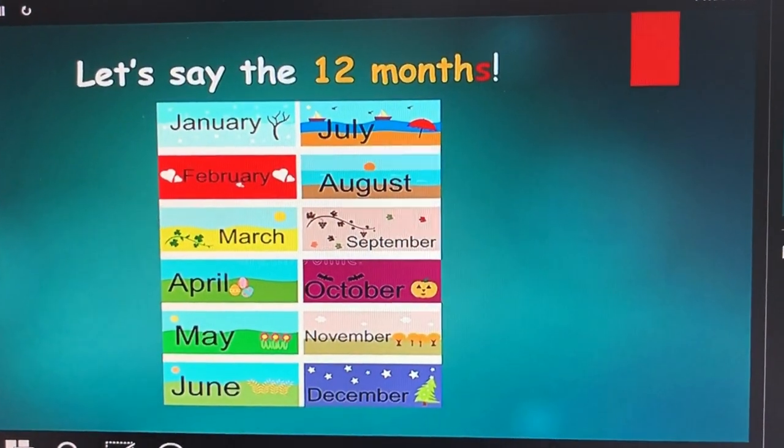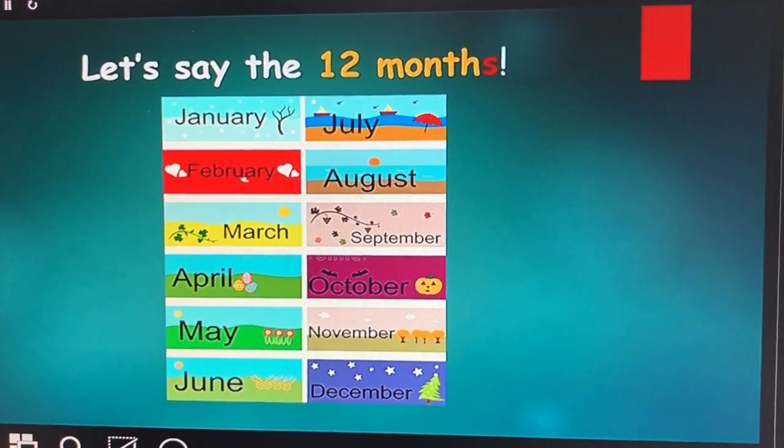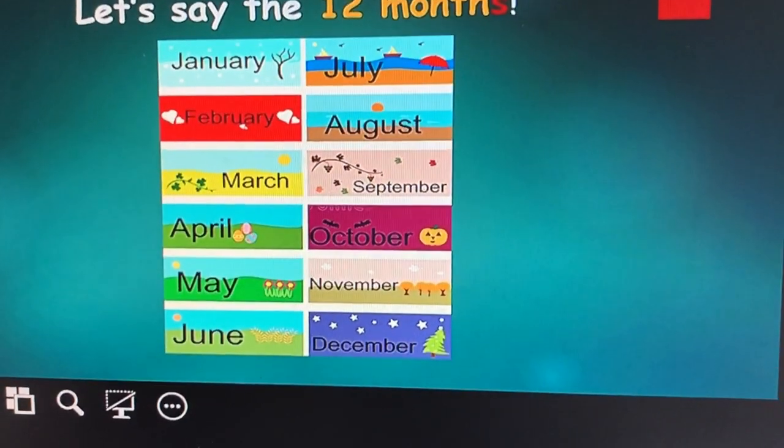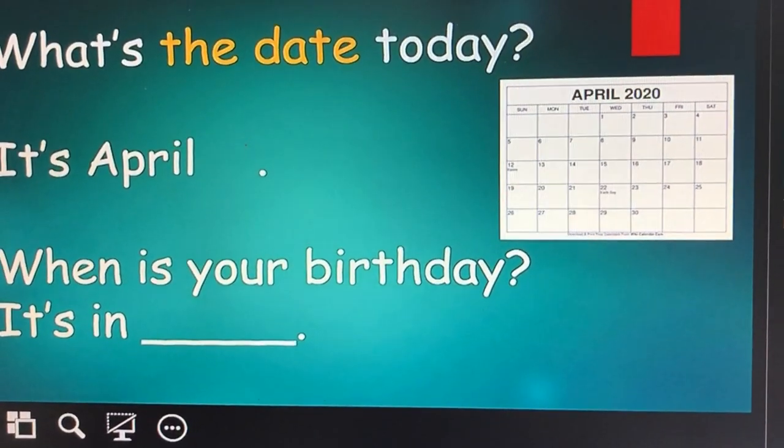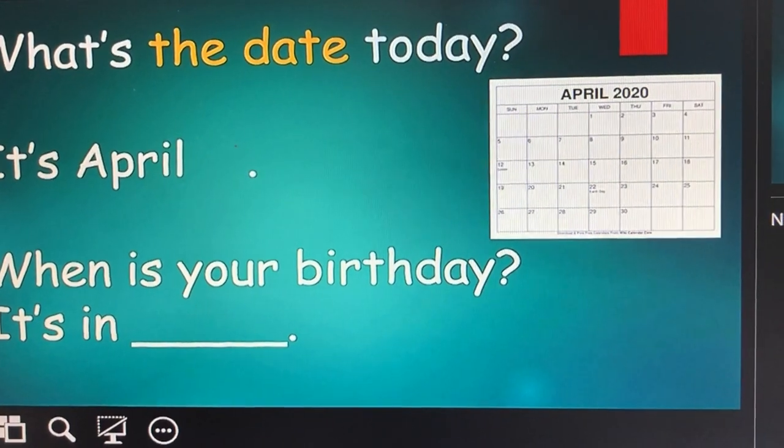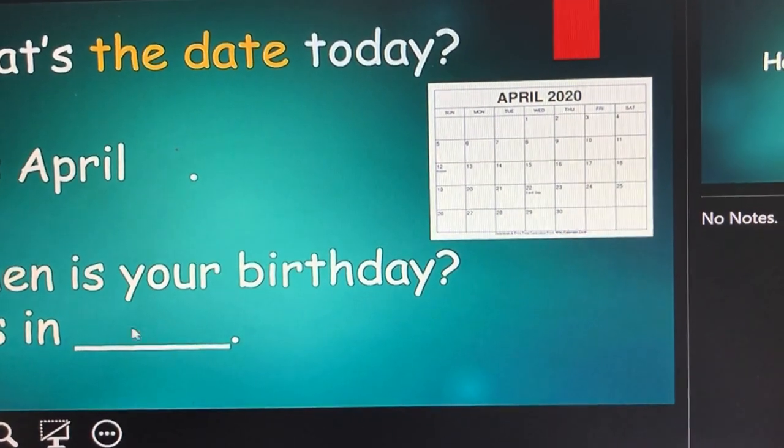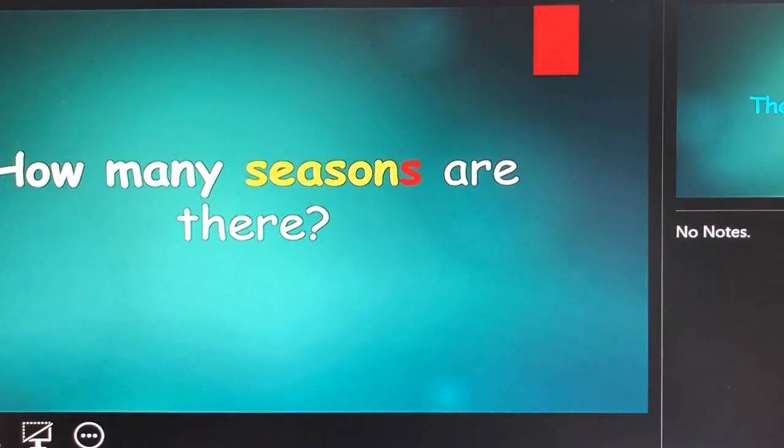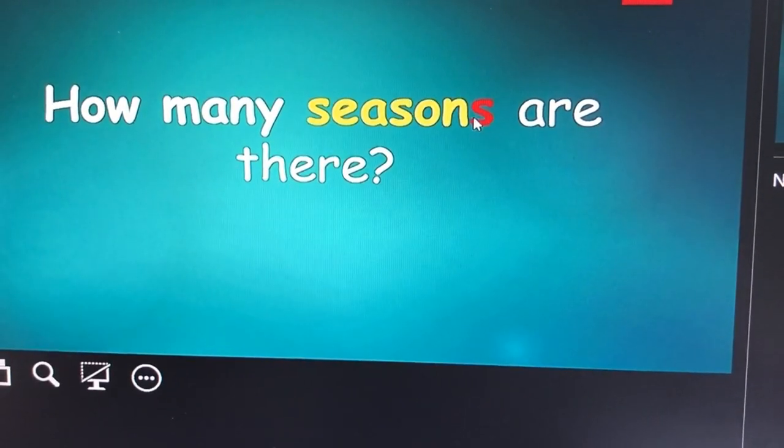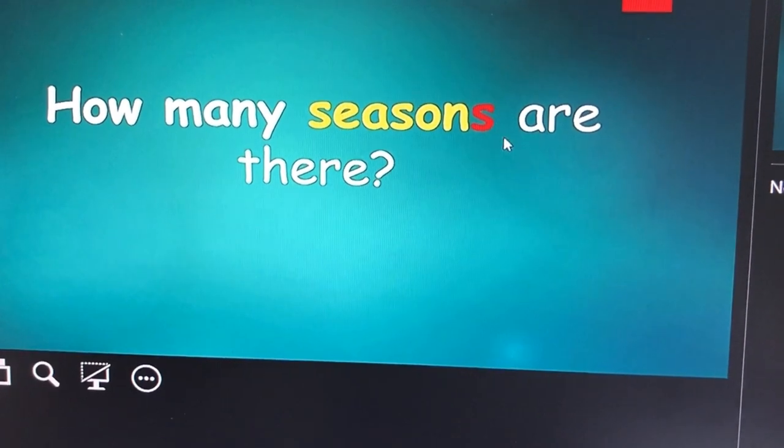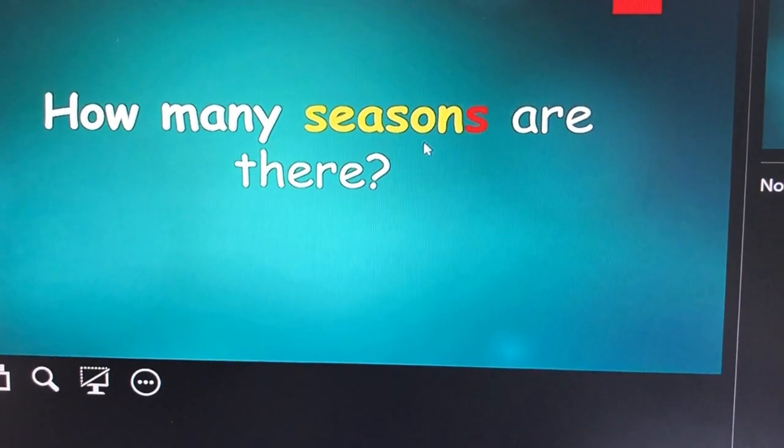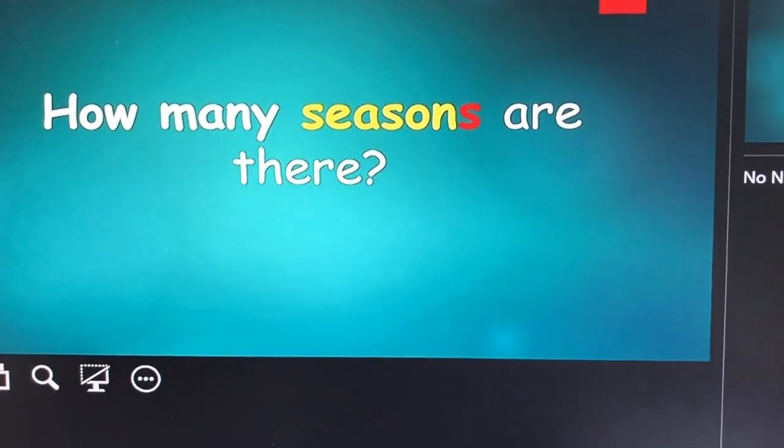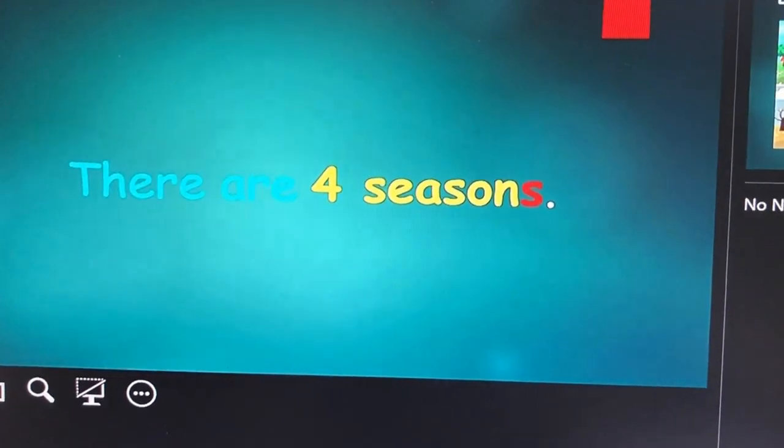I'll just go faster. There are 20 slides. What's the date today? When is your birthday? It's in or it's... How many seasons are there? Notice that the S is in red, emphasizing it's a plural. How many seasons are there? There are four seasons. Then I'll go over the four seasons and there's a song.